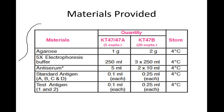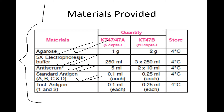The materials required include agarose, electrophoresis buffer, antiserum, standard antigens for graph construction, and test antigens which are the unknown samples. The standard antigens allow us to find the unknown concentration of antigens by plotting a standard curve.